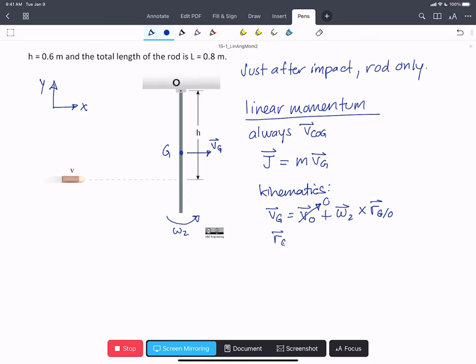R of G with respect to O is going to be half the distance of the rod, L over 2, in the minus J hat direction. So that's this vector R_G with respect to O.